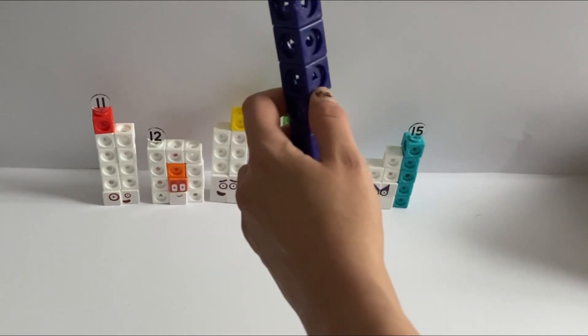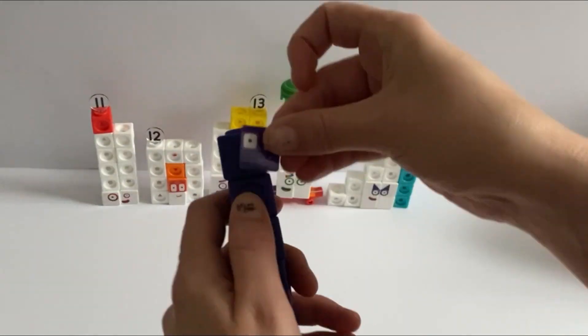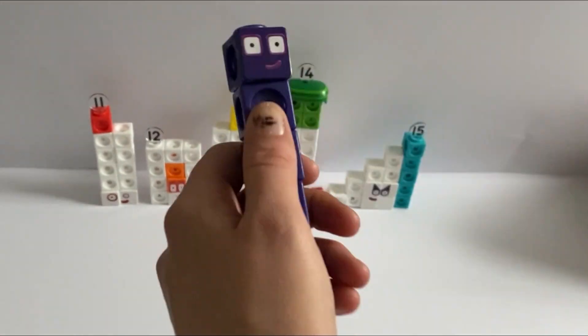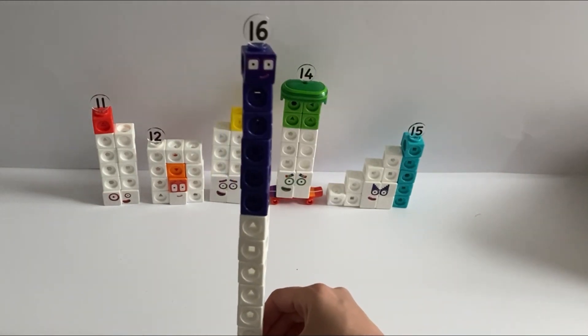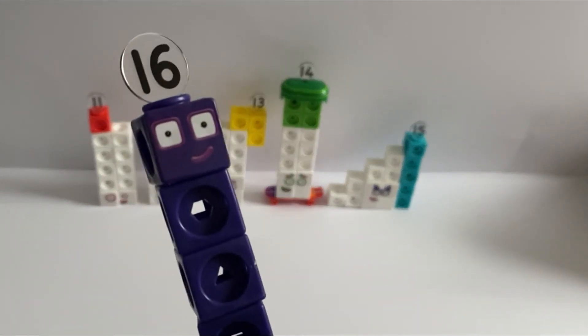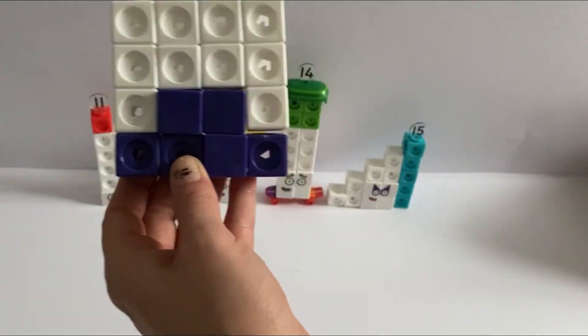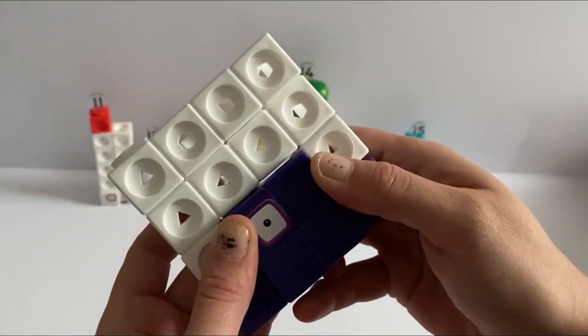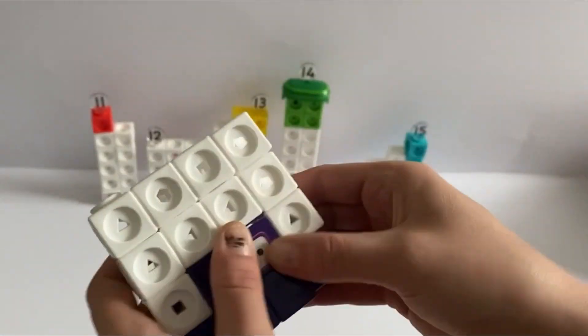Next up is number 16, who is 10 blocks white, 6 blocks purple, 1 faceplate, and 1 face sticker, and she has square eyes. And the numberling 16. Number 16 has square eyes because in her other common form, she is part of the square squad. She has 4 faceplates in this form, colored purple, with 3 face stickers.